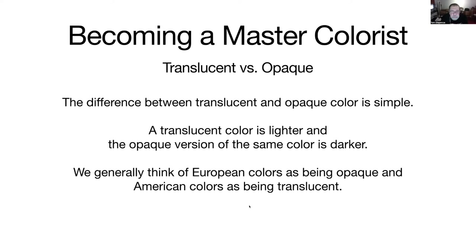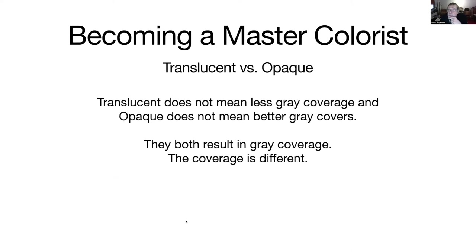Generally, we think of European colors as being opaque and American colors as being translucent. Almost all European colors appear darker than American colors, and that's one reason people think there's a gray coverage difference. Translucent does not mean less gray coverage, and opaque does not mean better gray coverage — they both result in coverage, but the coverage is different.